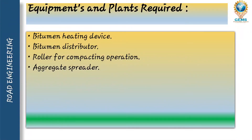Next is equipment and plant requirements. These include a bituminous heating device, bituminous distributor, roller for compacting operation, and aggregate spreader. These are the instruments needed for the laying of a bituminous road.